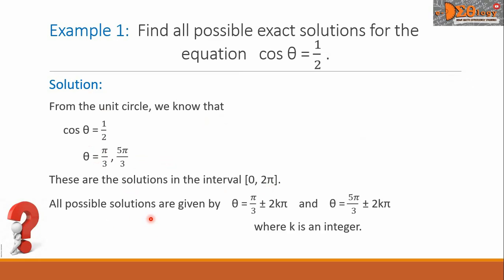All possible solutions now are given by θ = π/3 plus or minus 2 times k times π, and θ = 5π/3 plus or minus 2 times k times π, where k is an integer. These are the final answers.